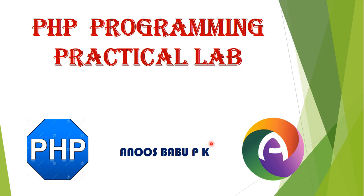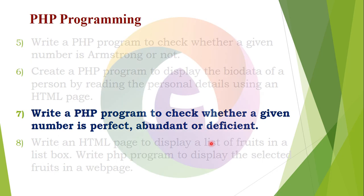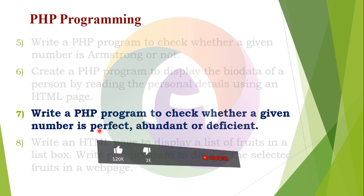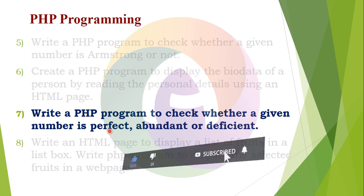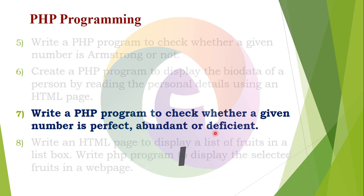PHP Programming Practical Lab. In our discussion content, we will write a PHP program to check whether a given number is perfect, abundant, or deficient. Let's check these three things: the number is perfect, abundant, and deficient.